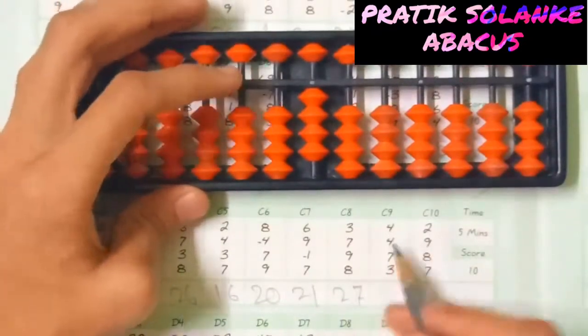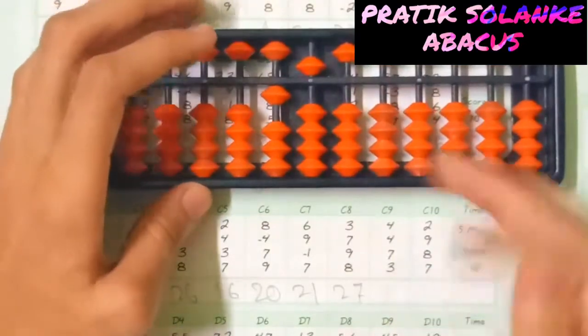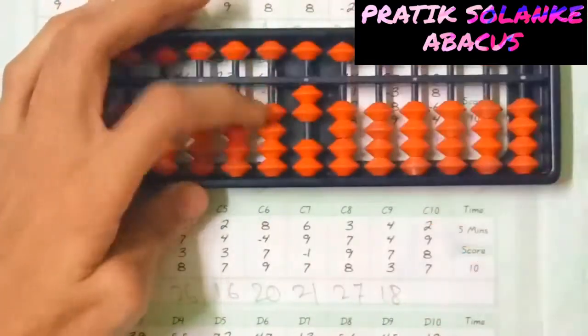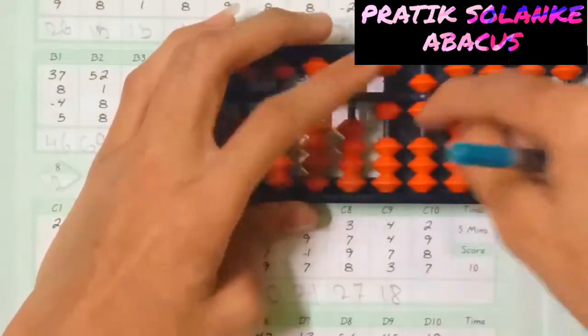4 plus 4, 4 ka friend 1, 1 ko base deenge small boss ko bula leenge. 7 ka friend 3, 3 ko base deenge big boss ko bula leenge. Phir bad me vaapas 3 18, 2 plus 9, 9 ka friend 1, 1 ko base deenge big boss bula leenge. 8, 7 ka friend 3, 3 ko base deenge big boss ko bula leenge.